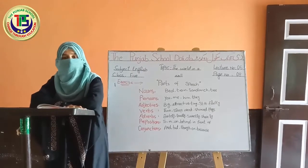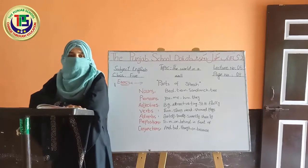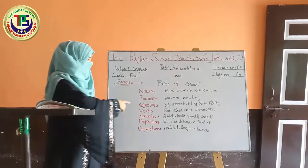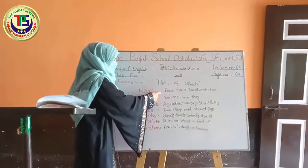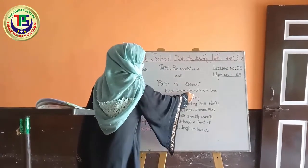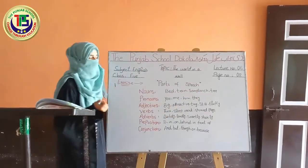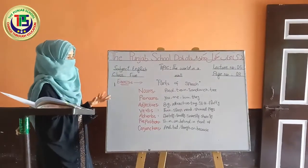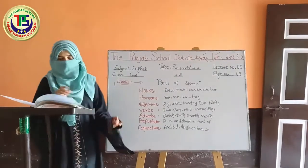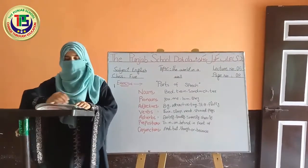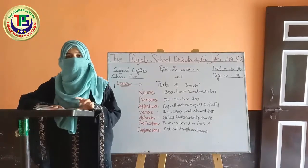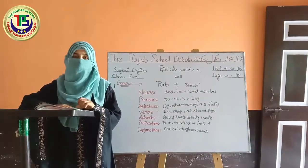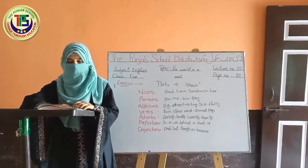یعنی کے جو noun ہوتا ہے وہ کسی شخص، جگہ یا چیز کے نام کو کہتے ہیں۔ جیسے کہ اس کی example دیکھیں: bad, train, sandwich, tree — یہ جتنے بھی نام ہیں یہ کسی جگہ کے یا چیز کے نام ہیں۔ تو جہاں پہ کسی شخص، جگہ یا چیز کا نام آئے گا، آپ کو پتہ ہونا چاہیے کہ وہ noun کہلائے گا۔